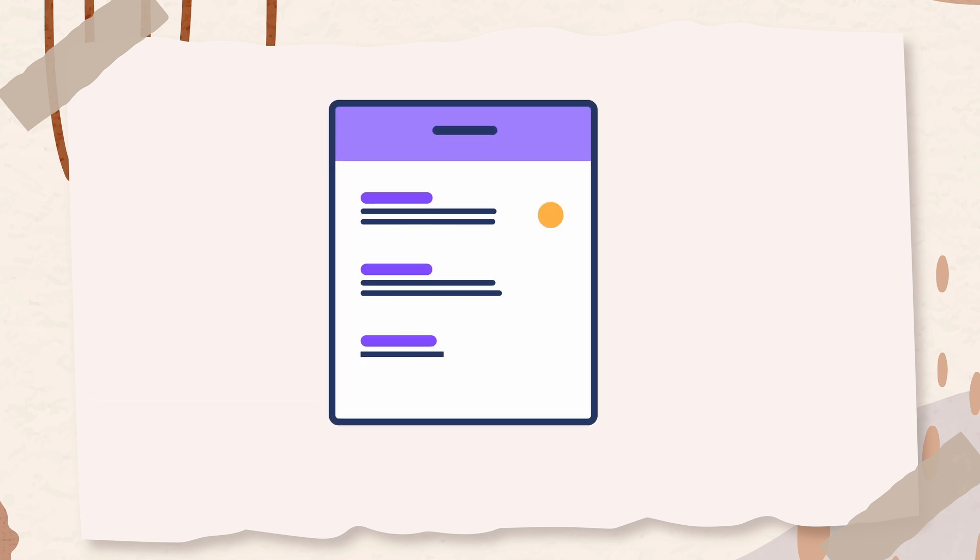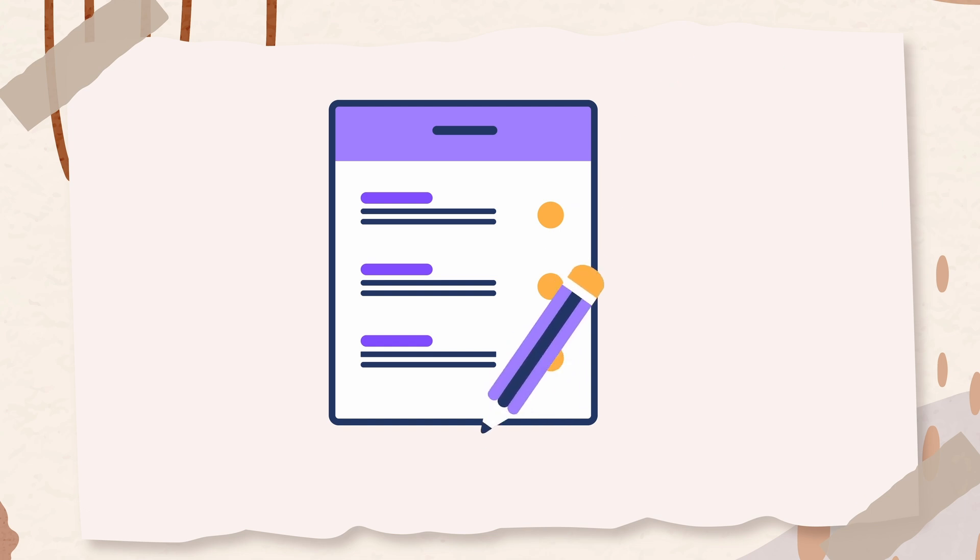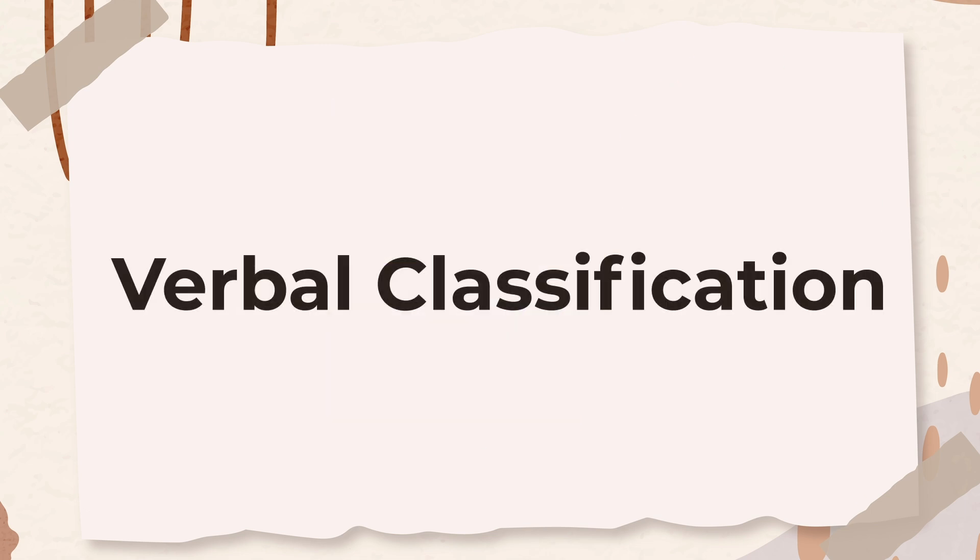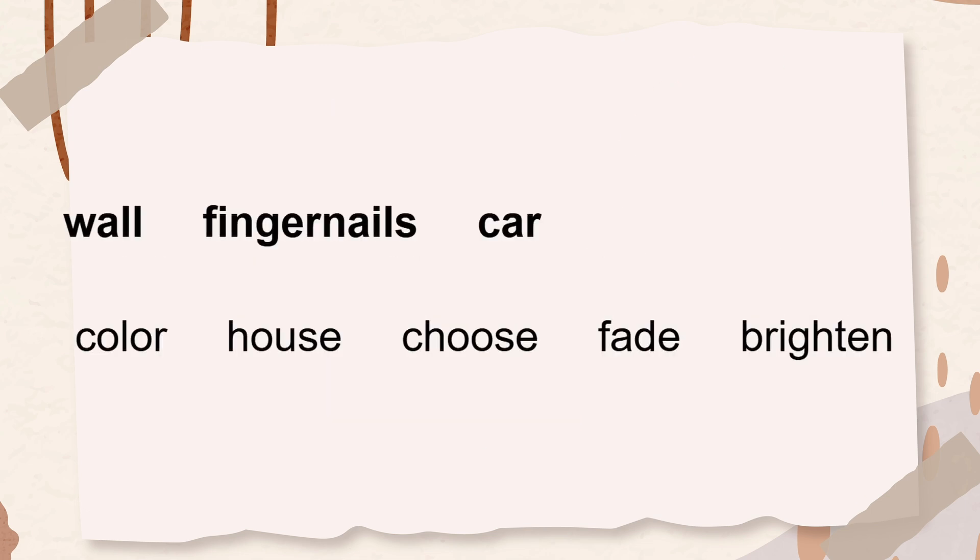Alright, now we arrived at the final subtest of the test, which is called verbal classification. This question provides three words that are alike in some way. Decide how they are alike, and choose the word that belongs in the same group as the first three words. The correct answer is house. A wall, fingernails, a car, and a house are all things one might paint.